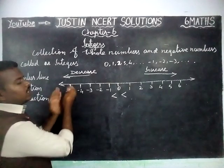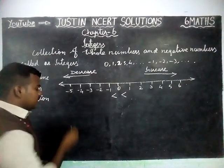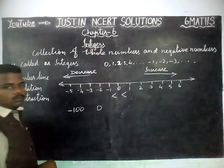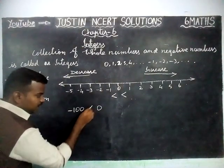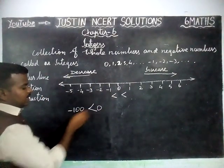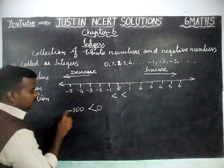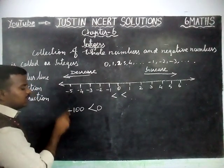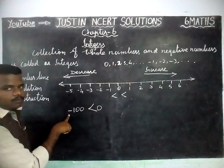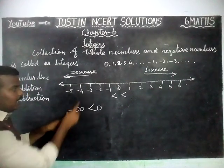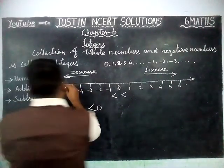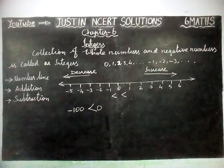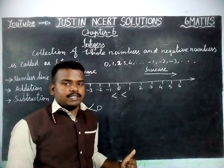The number is not important — we cannot say minus 100 is greater than 0. Minus 100 is less than 0. The sign is very important. If there is a minus sign, it is the smallest value. On the number line, if you are moving left-hand side, there is no end — it keeps going and that value keeps decreasing.